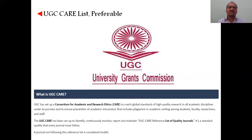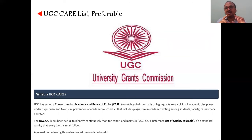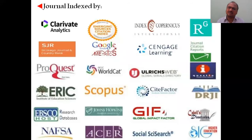The UGC CARE list is preferable but not mandatory. UGC stands for University Grants Commission. CARE stands for Consortium for Academic and Research Ethics. If a journal follows ethical standards, it will be included in the UGC CARE list, which means it is recognized by the UGC. Try to give preference to UGC CARE listed journals, but it is not mandatory.